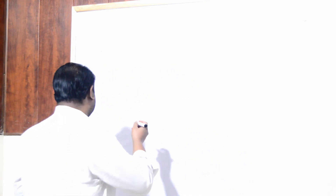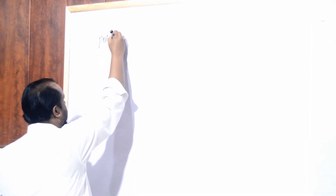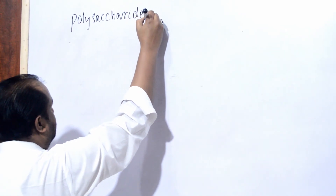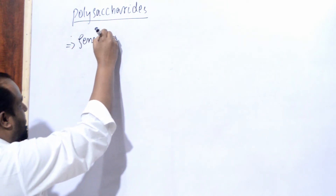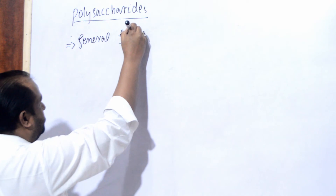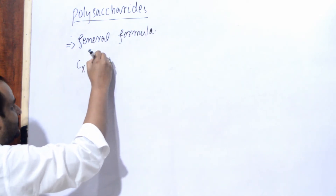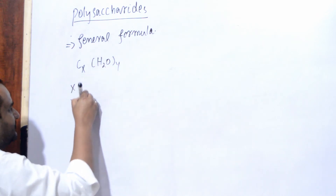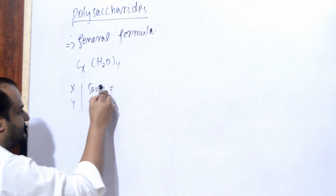Now we will discuss about the polysaccharides. Student, aap dekhen - in case of polysaccharides, maine start mein aapko bataya tha ke inaka jo general formula hai woh carbohydrate ka hi formula hai: CxH2Oy, jis mein x aur y same number bhi ho sakte hain aur vary bhi kar sakte hain.